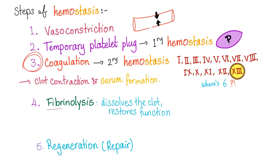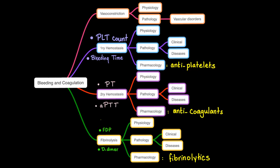Where is the problem in Factor 13 deficiency? It's in the coagulation cascade, specifically Factor 13. The function of Factor 13 is to stabilize the unstable fibrin into stable, strong, cross-linked fibrin fibers. Without Factor 13, you'll form a clot, but without stabilization the clot will dissolve very quickly and the patient may bleed to death. The problem is in secondary hemostasis.